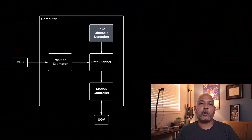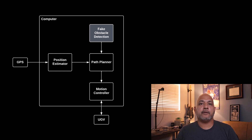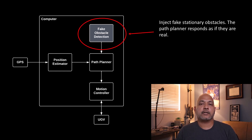But maybe I know what the output of the obstacle detection algorithm needs to look like — the shape of the objects, what the vehicles look like — and I can manually create those. So I can manually create ten fake obstacles and inject that into my path planner algorithm and see what it does.